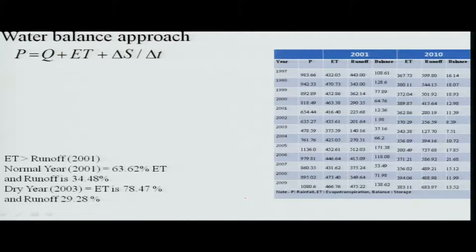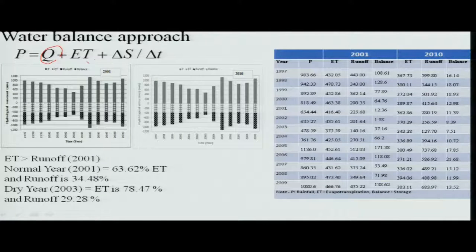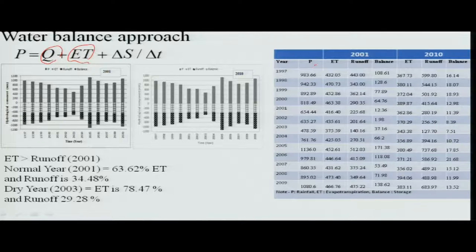The basic thing we are talking about is the water balance. The water balance is normally defined in terms of the quantity of precipitation, the quantity of evapotranspiration, and the runoff. When you want to calculate it, you determine how much is the precipitation, how much is the evapotranspiration, how much is the runoff, and what is the balance you are able to get out.